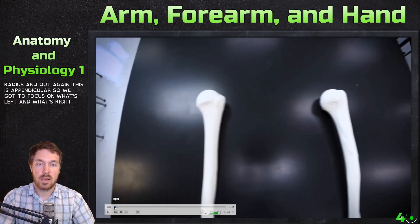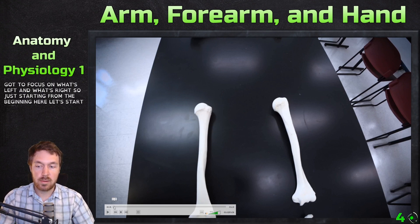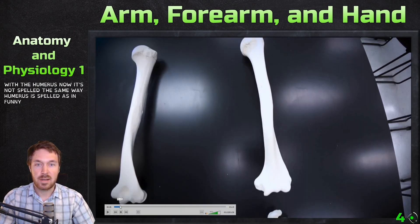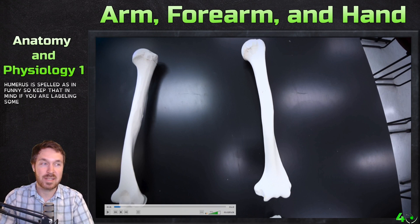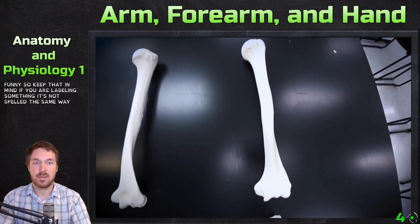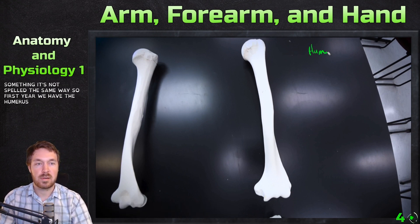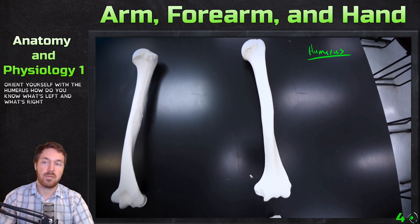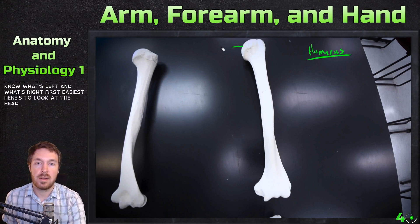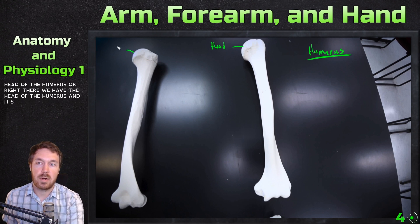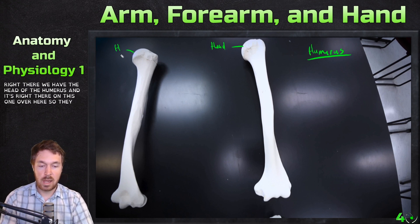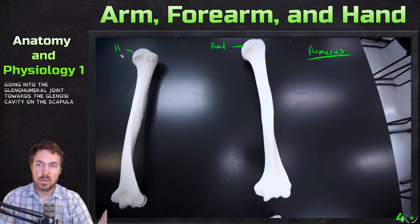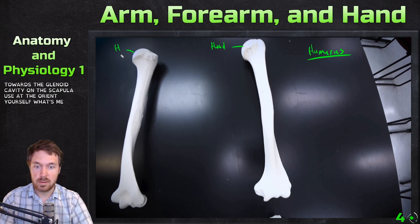Starting from the beginning with the humerus — note it's not spelled the same way as 'humorous' meaning funny, so keep that in mind when labeling. To orient yourself with the humerus and know what's left and what's right, the easiest thing is to look at the head of the humerus. The head is what goes into the glenohumeral joint toward the glenoid cavity on the scapula — use that to find what's medial.